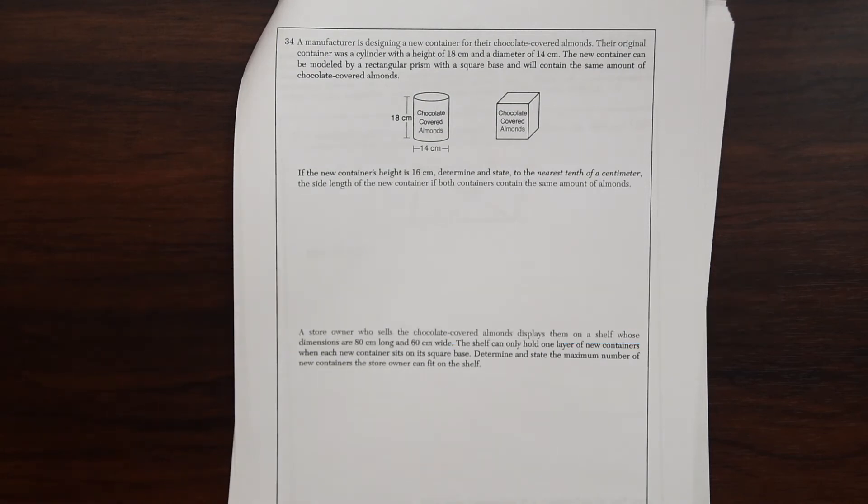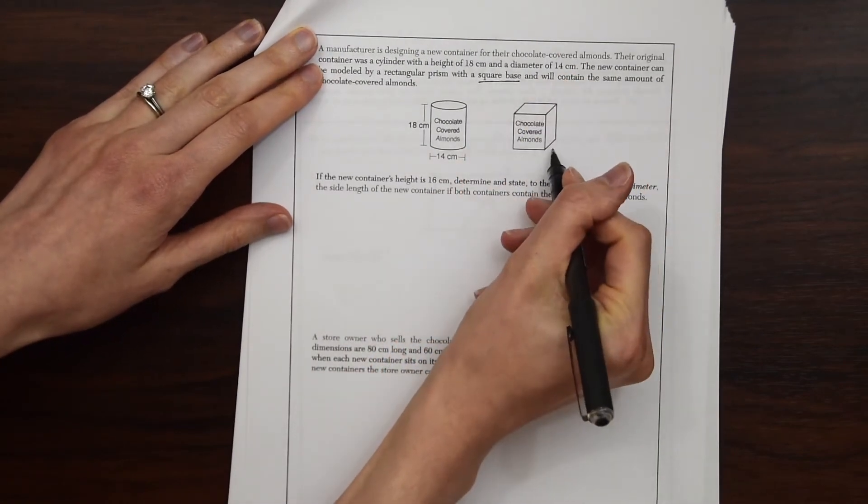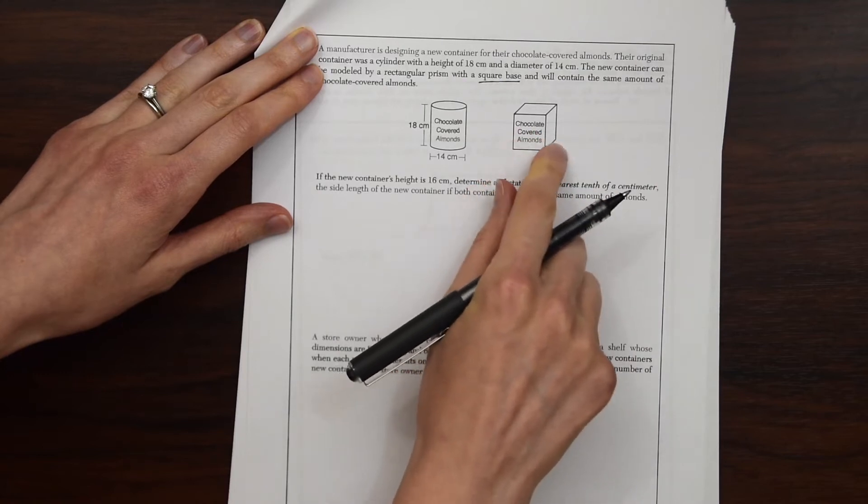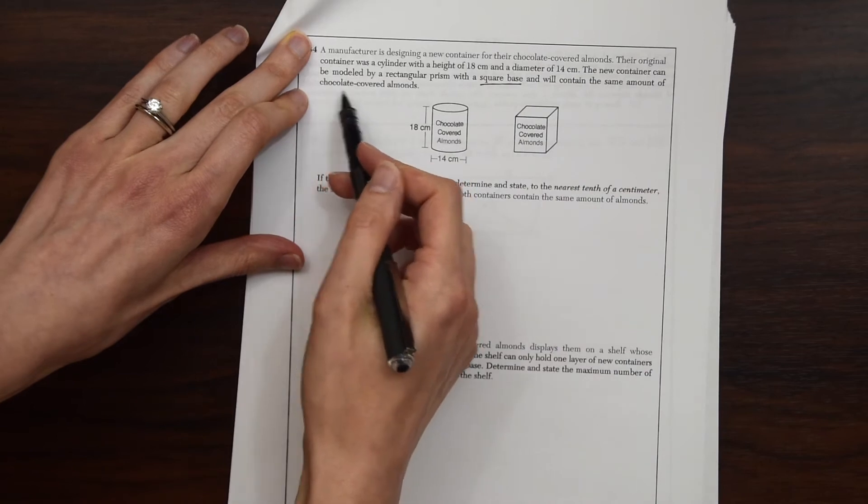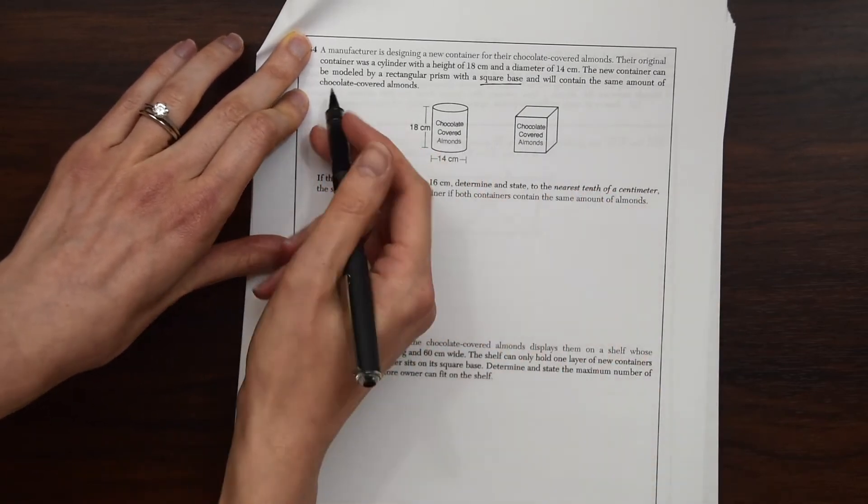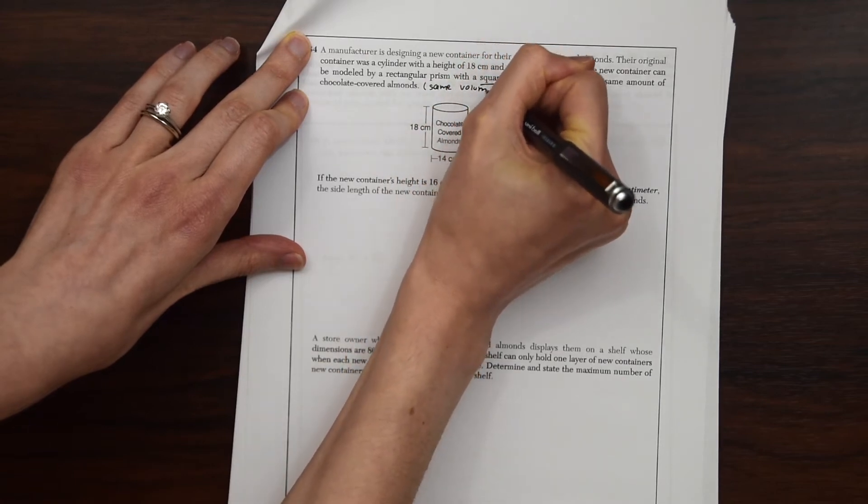A manufacturer is designing a new container for their chocolate-covered almonds. The original container was a cylinder with a height of 18 centimeters and a diameter of 14 centimeters. The new container can be modeled by a rectangular prism with a square base and will contain the same amount of chocolate-covered almonds. We see that this is going to be a square base, so we know that these are going to be the same values all going around over here and over here up top. And they contain the same amount of chocolate-covered almonds. So that means it's going to have the same volume.